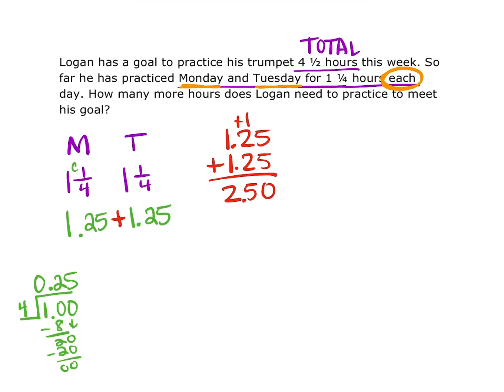So he's already practiced for 2.5 or 2.50 hours. But he's trying to get to four and a half. We can't leave it as a fraction. I know a half is 50 cents. If you didn't know a half was 50 cents, you could use our cowboy and horse method down here, just like we did for the 25 cents.